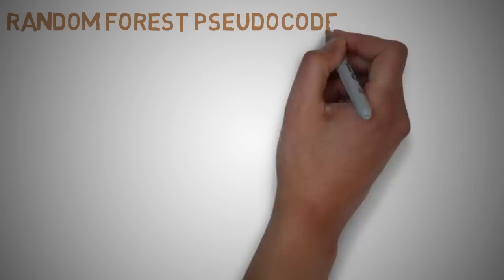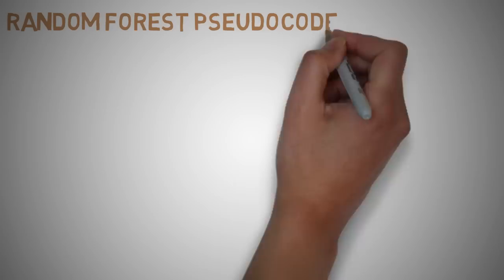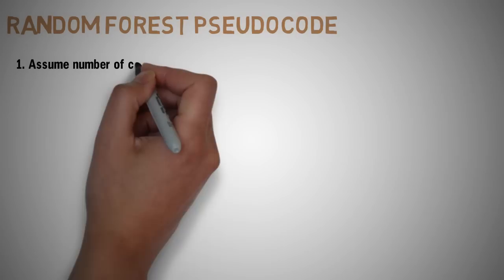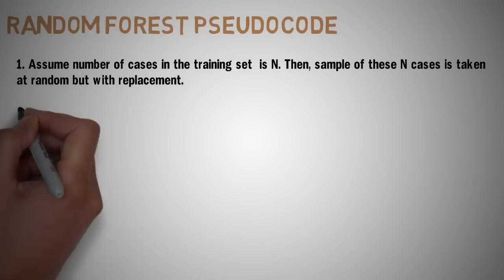Let's take a look at the random forest pseudocode and how it works. So it works in the following manner where each tree is planted and grown as follows. Assume a number of cases in the training set is N. Then the sample of these N cases is taken at random but with replacement. The sample will be the training set for growing the tree.